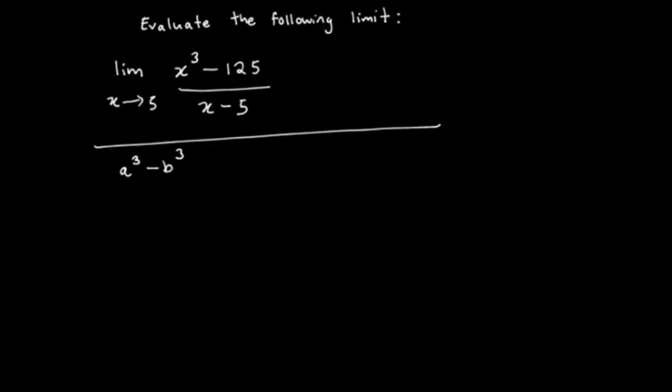So when you're looking at factoring a difference of cubes, you can use this template: a minus b times a squared plus ab plus b squared. If you look at this sign here, this is the sign that changes. So this is going to be opposite of what your initial expression is. If it's a difference of cubes, this is going to be positive. If it's a sum of cubes, this is going to be negative. This last term is going to stay the same.